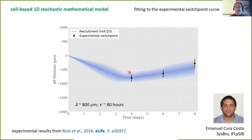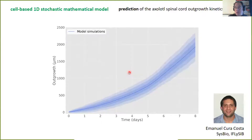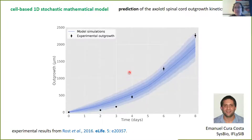The interesting thing comes with predictions. With the model parameterized this way, we can predict how the outgrowth of the spinal cord would look if the model is correct. We compared this prediction with experimental data, and the prediction of the model satisfies the experimental outgrowth that we acquired.